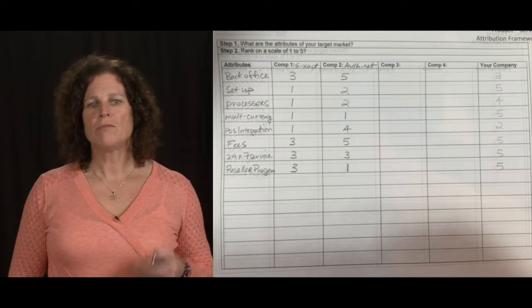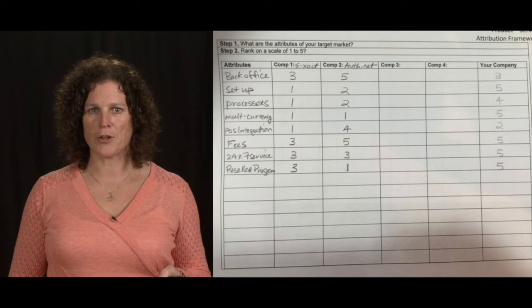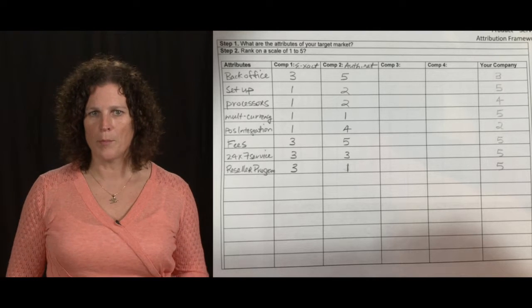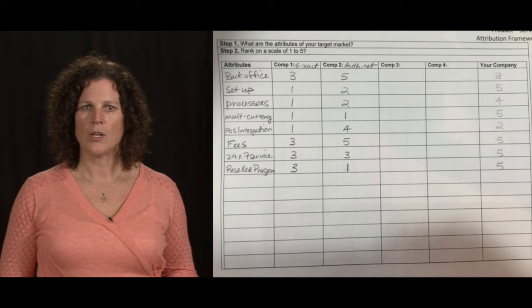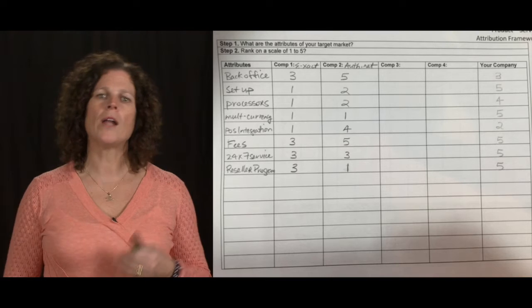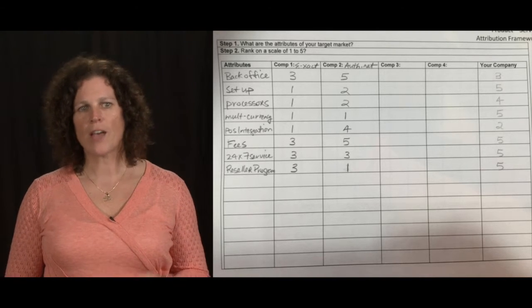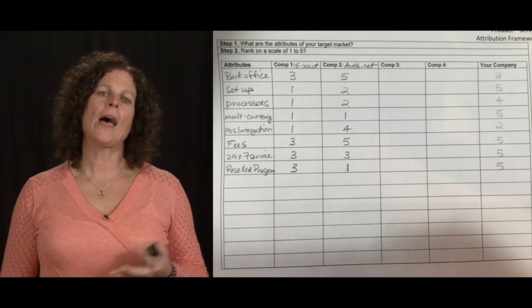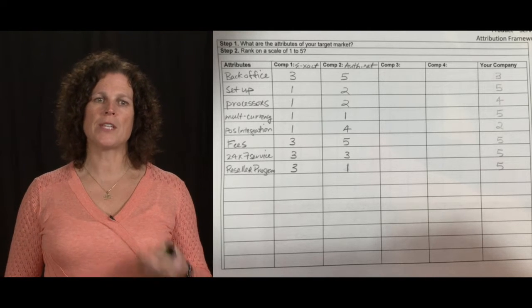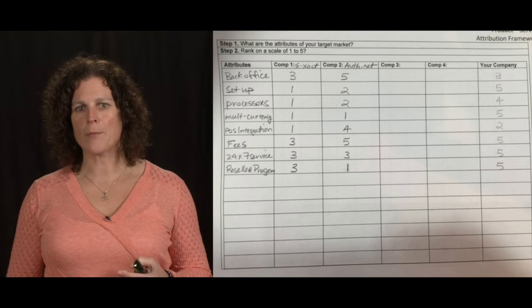After you've rated your company, rate your two to three top competitors, the ones that you talk most about in your organization. Put them in competitor one, competitor two, and then rank them the same way. One being the worst, five being the best. As you can see as this builds up, I'm working through this example with you.